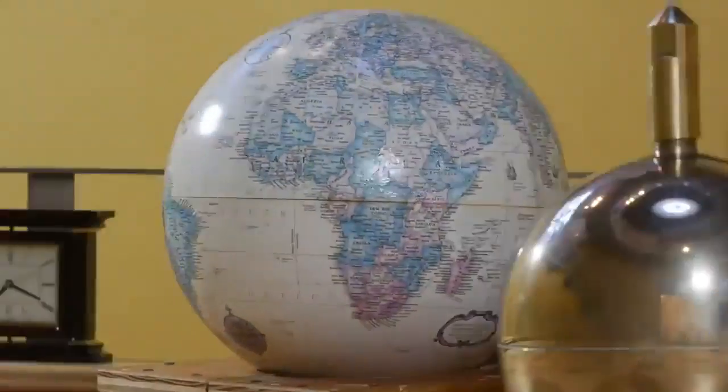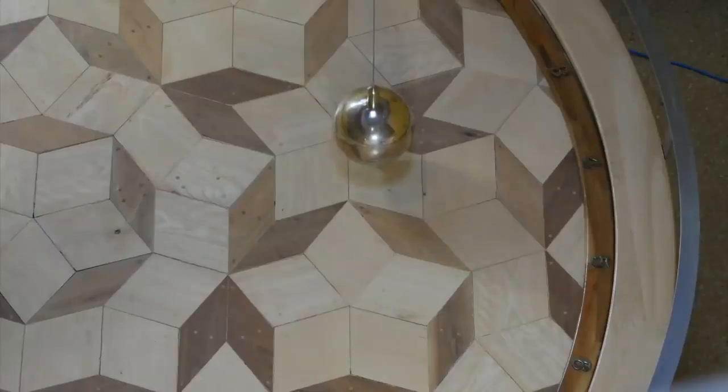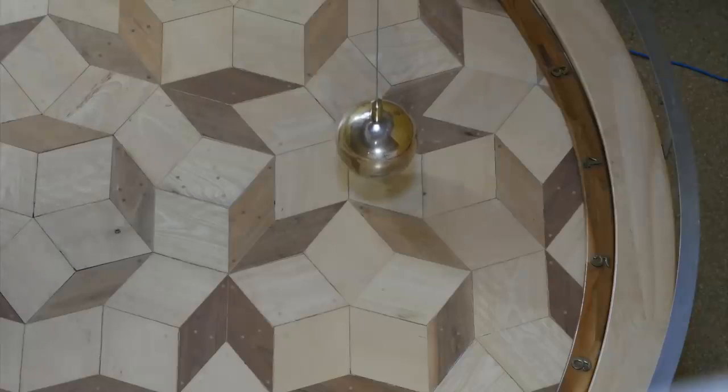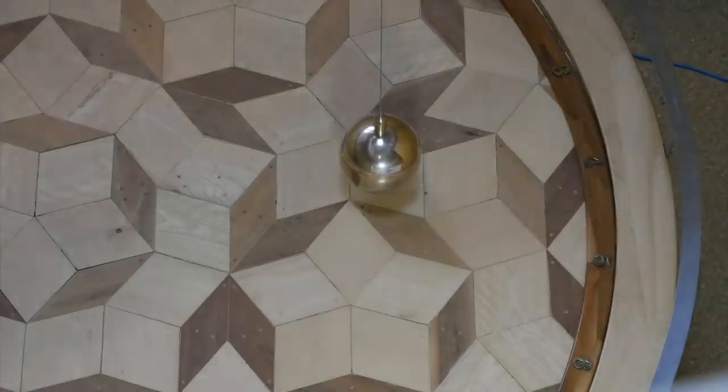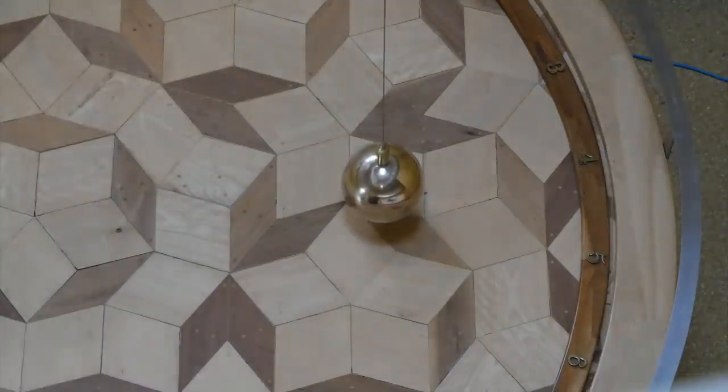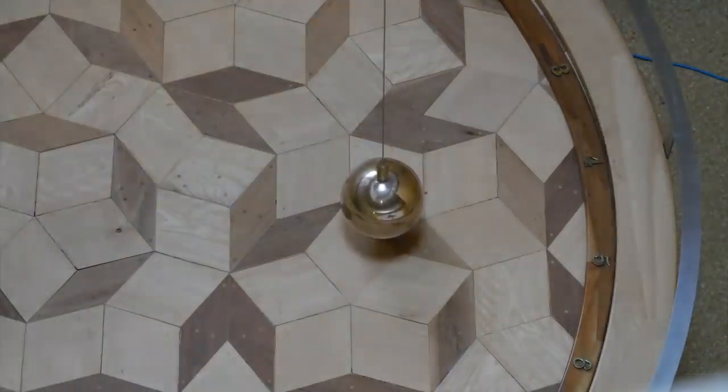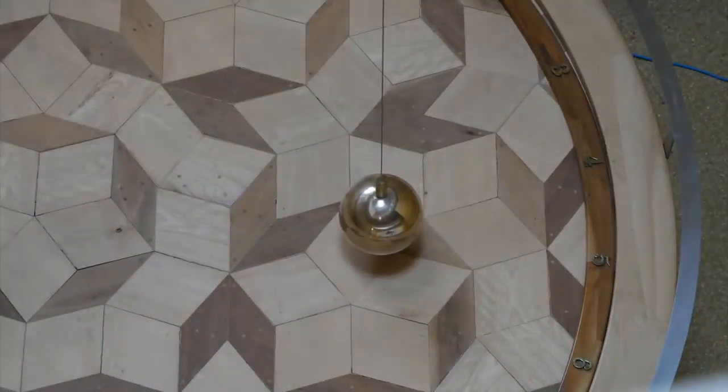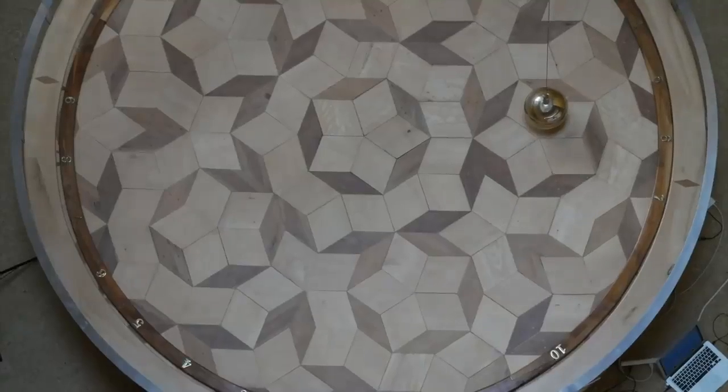Here in the northern hemisphere, Foucault pendulums rotate clockwise because of the Earth's rotation. And that rotation also causes sundial shadows to move clockwise. I mean, it's probably where we got the term clockwise in the first place.